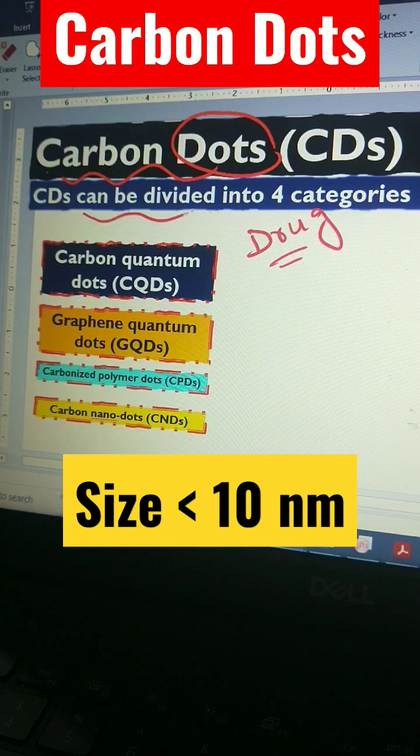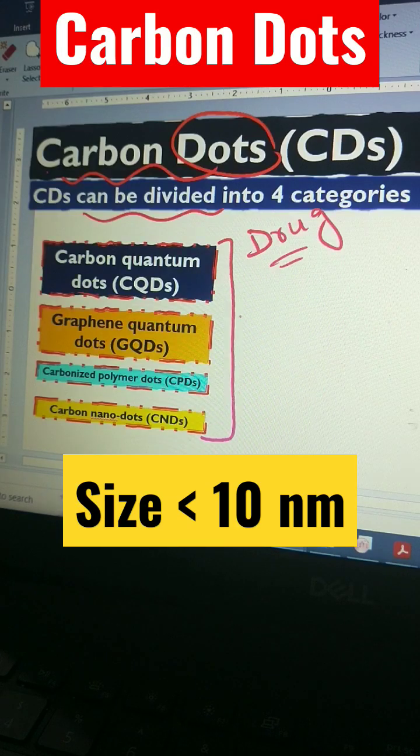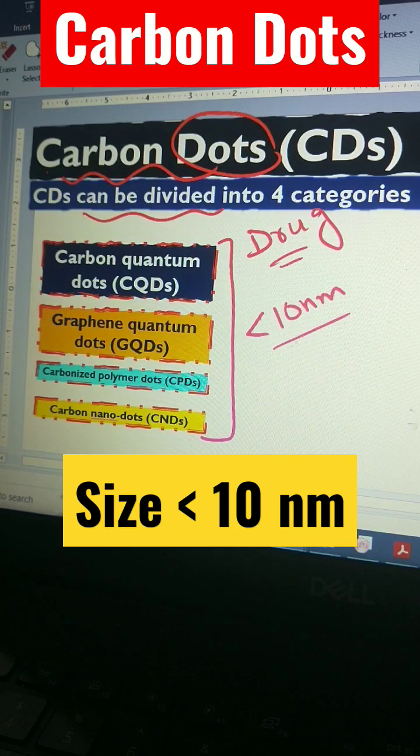Carbon dots are basically divided into four types, and the beauty of these four types is that all have dimensions less than 10 nanometers - very, very small.